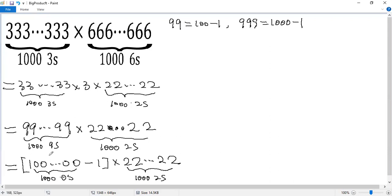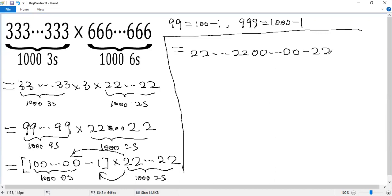Now we distribute this number to the first two terms. We get a thousand twos, followed by a thousand zeros, and then minus a thousand twos. So here is a thousand twos, and here a thousand zeros. Here a thousand twos.